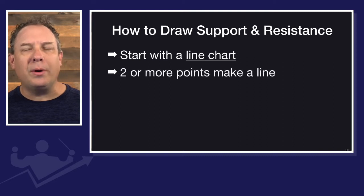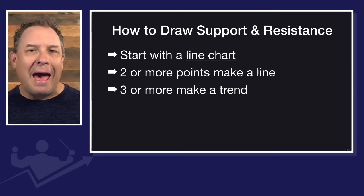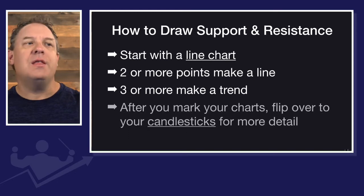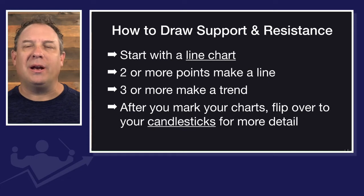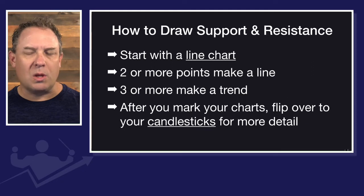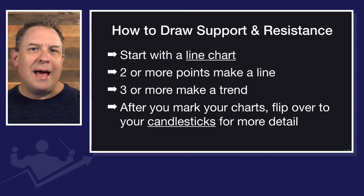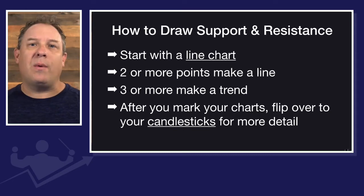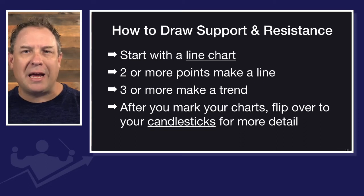Next, we're looking for two points to make a line, three or more points to establish the trend or the pattern. Then after we've charted the entire chart, we flip over, look at our candlesticks, and we'll get a few more details and might adjust some lines. We'll get some great confirmation but maybe do some line adjustment. This is the right way to do it — this is how I learned to do it 20 years ago.